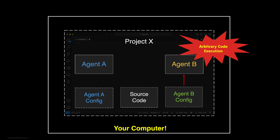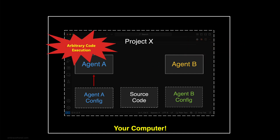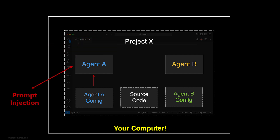Agent B now has full access to the computer. In addition, agent B can do the same for agent A — modify its settings and give agent A more capabilities than it initially had. All of this can be triggered with prompt injection from an untrusted source. If you process source code files from untrusted sources, or have an MCP server that reads data from a database with untrusted data, all of this is exploitable remotely.